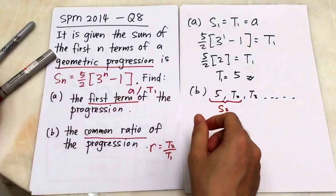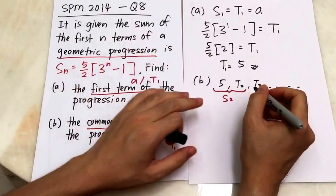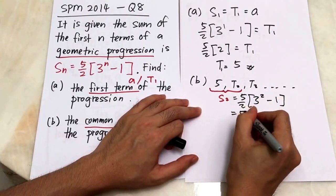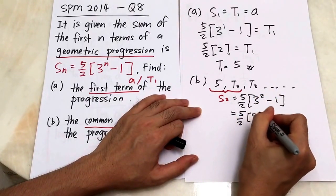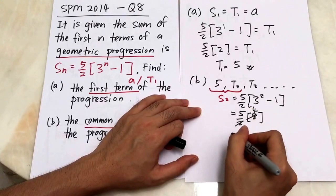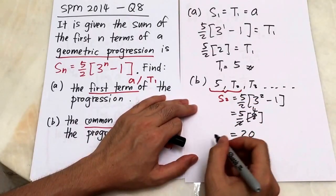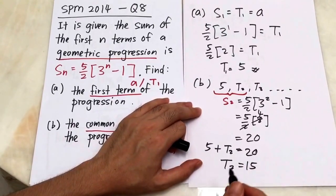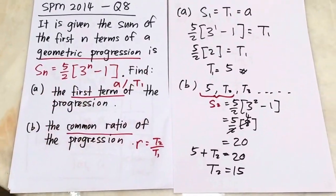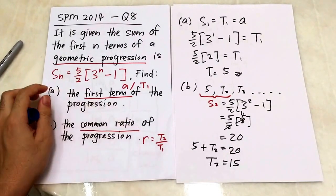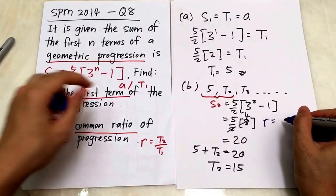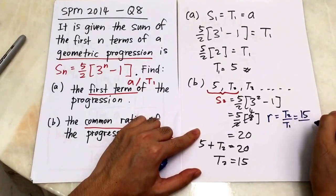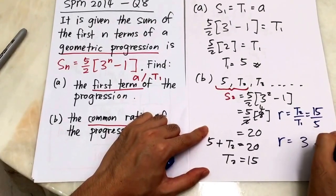S2 is found by substituting n = 2: five over two times three to the power of two minus one, which is five over two times eight, giving twenty. So five plus T2 equals twenty, meaning T2 equals fifteen. The common ratio is therefore T2 divided by T1, which is fifteen over five, equals three.